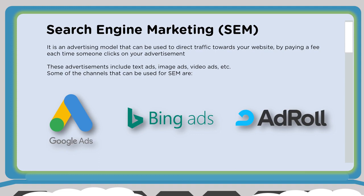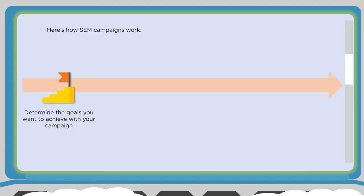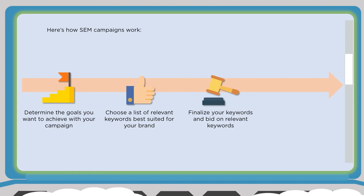When setting up an SEM campaign, determine the goal you want to achieve up front — especially when paying per click, you need to define your goals so you can measure them accordingly. Then choose a relevant list of keywords: brand keywords or keywords related to what your brand offers. Once you finalize those keywords, you bid on them. You then align those keywords with headlines — all done within the framework of whichever platform you're advertising on. The key is to establish your goal because you need to be able to measure it.